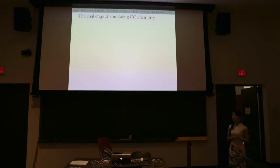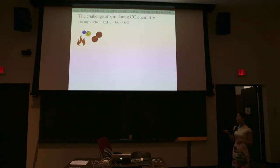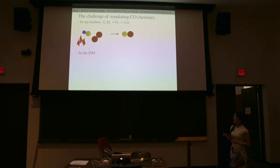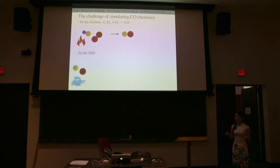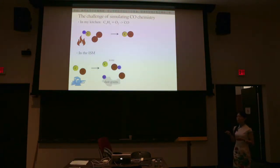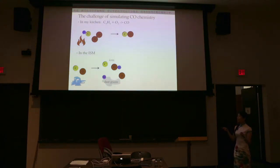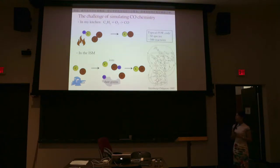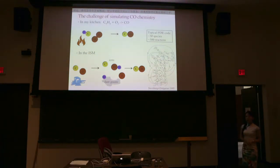It turns out it's actually quite challenging to simulate CO formation. In your kitchen, if you burn some hydrocarbons like stove gas with oxygen, you form CO. But in the ISM, the formation is much more complicated — the ISM is very cold and not very dense, so the collisional rate is very low. To form CO, you have to rely on ions, which increase the cross-section, or on dust grains, which act like a sticking agent for atoms to come together. So in the ISM, CO formation requires a network of tens of species and hundreds of reactions.